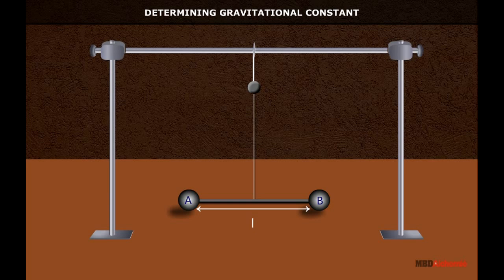Large spheres S1 and S2 are brought close to the small masses M at A and B from the opposite sides.